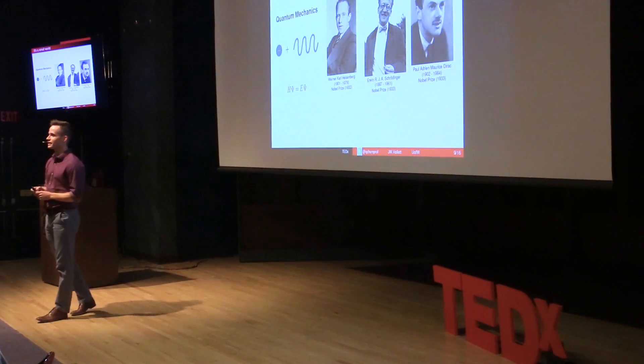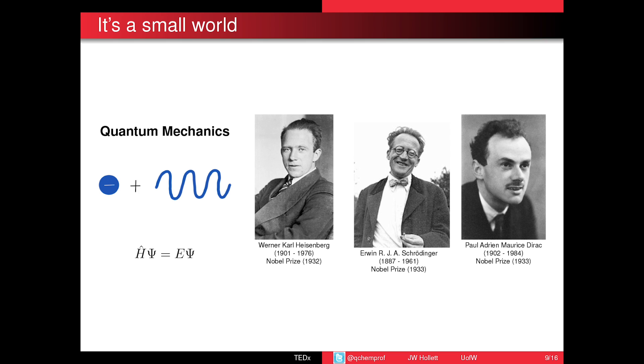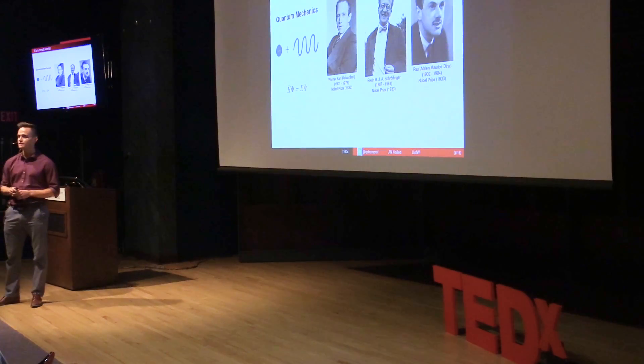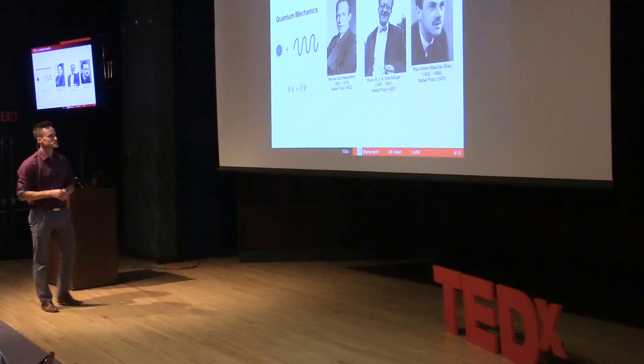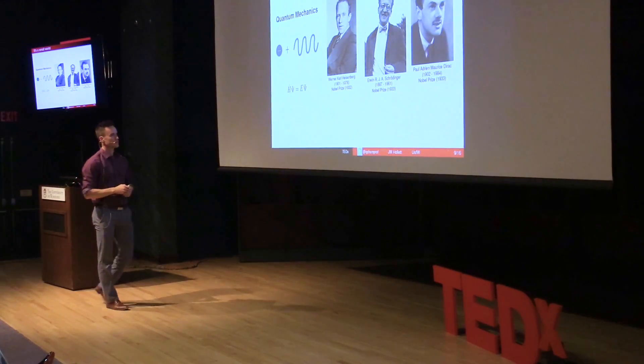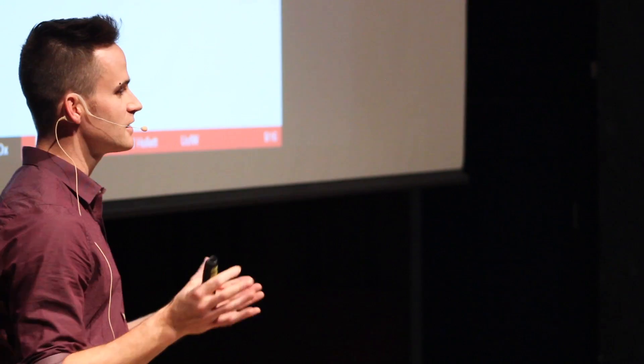But lucky for us, way back in the early 1900s, some very clever gentlemen came up with some new physics to describe how the very small objects behave, and they called it quantum mechanics. So now we have equations that tell us what the very small things do, and we can mathematically model our atoms, our electrons, and our molecules, and then model matter.